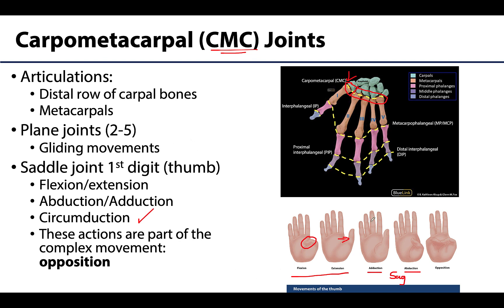Some of these movements are vital in the complex movement of opposition that can occur at the thumb. By complex, I mean it involves different kinds of actions for more than one joint, but the actions of the carpometacarpal joint of the first digit are very important in terms of us being able to have opposable thumbs.